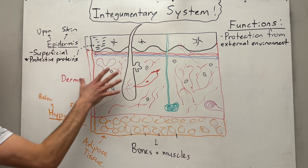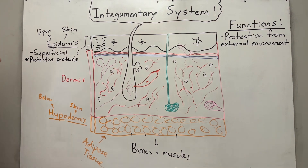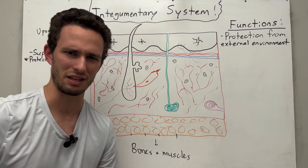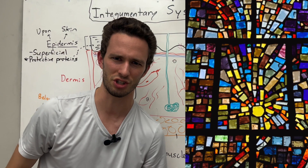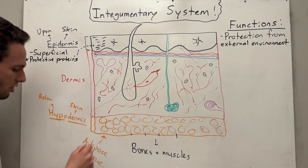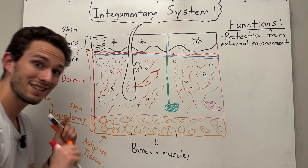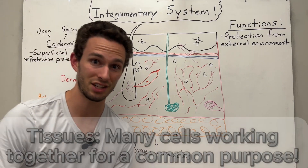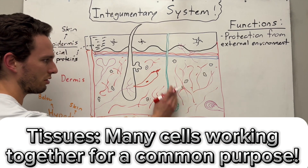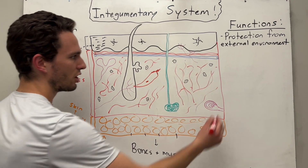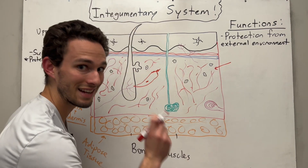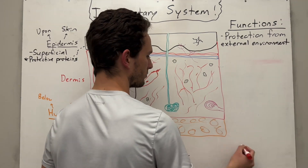Let's focus on the dermis in this video. The dermis has all these beautiful structures — it almost looks like a big mosaic canvas. The dermis has a lot of structures, and let's start with the tissue type. Tissues are just a collection of cells doing a common purpose. Most of this tissue has all these threads, so the dermis is called dense irregular connective tissue.